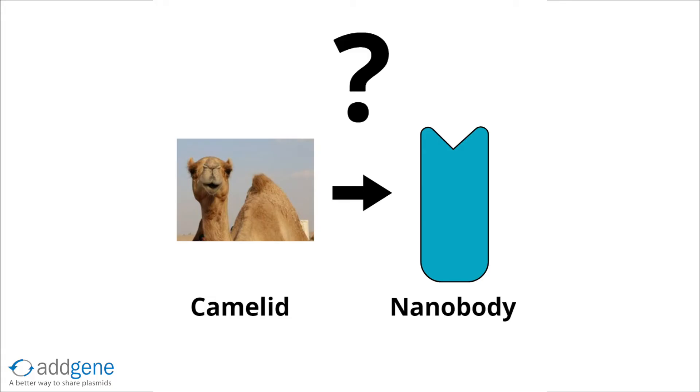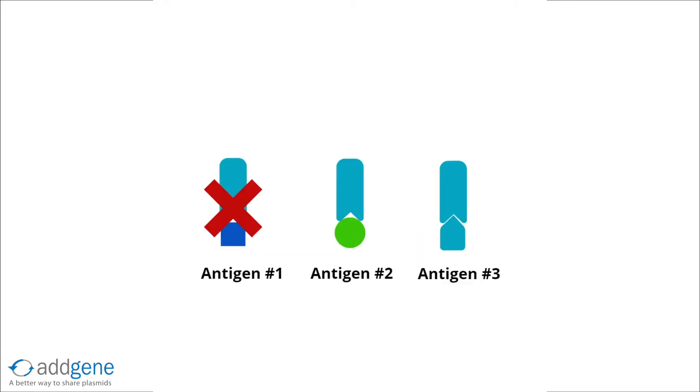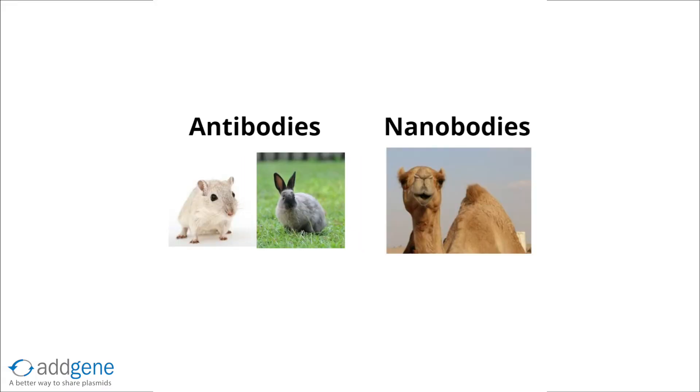But wait, how do you go from a camelid to a nanobody? And how is a nanobody designed against an antigen of interest? Making a nanobody has similarities to how antibodies are made, but nanobody production does not require animal sacrifice.